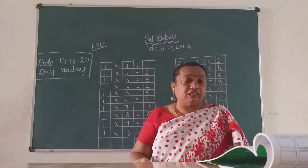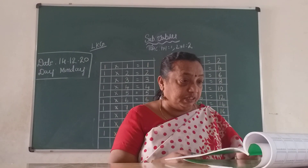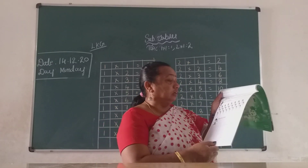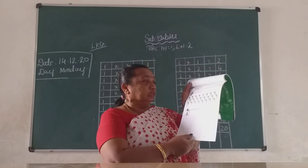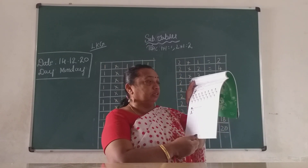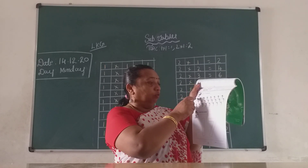Now take out your worksheet book, children. Page number fifty-three. Here, see — look at this picture. What is this, children? Mangoes. Circle the seventeen mangoes. Here, count children — how many are there?